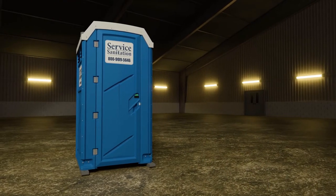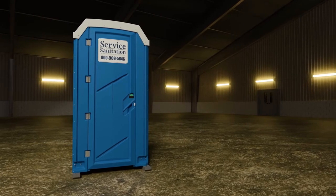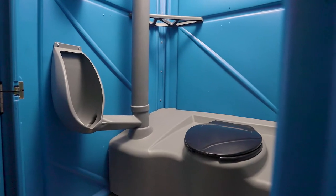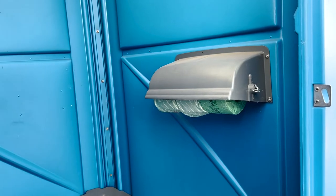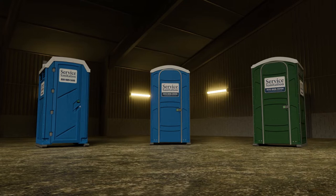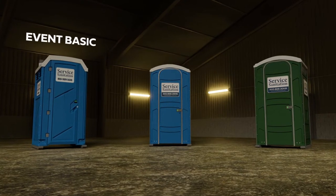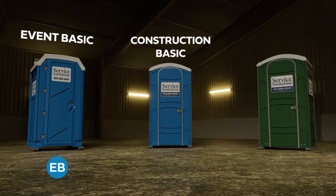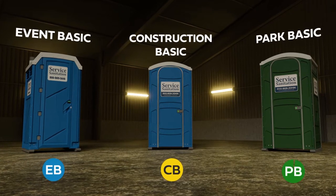We'll begin the tour by reviewing one of our most popular rental items: our signature basic restroom. This unit is equipped with a toilet, urinal, and fully stocked toilet paper dispenser. Although it can come in a variety of different shapes and colors, there are essentially three different types of basic restroom variants in our fleet today: the Event Basic, designated as EB; Construction Basic, noted as CB; and the Park Basic, identified as PB.